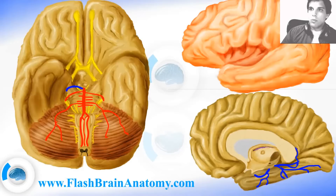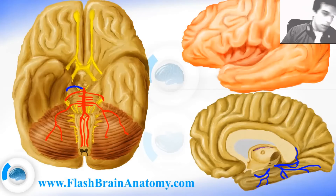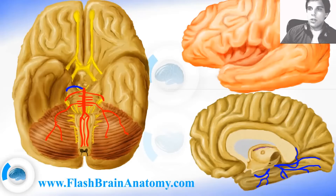Then we have the medial occipital artery going something like this, and then we have the dorsal branch — the dorsal branch of the corpus callosum. The main artery continues in the calcarine fissure as the calcarine branch.